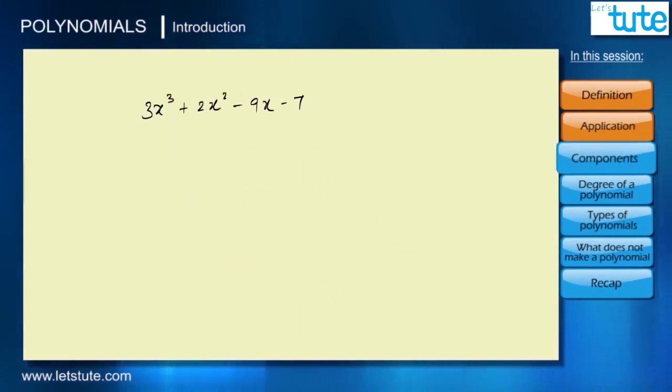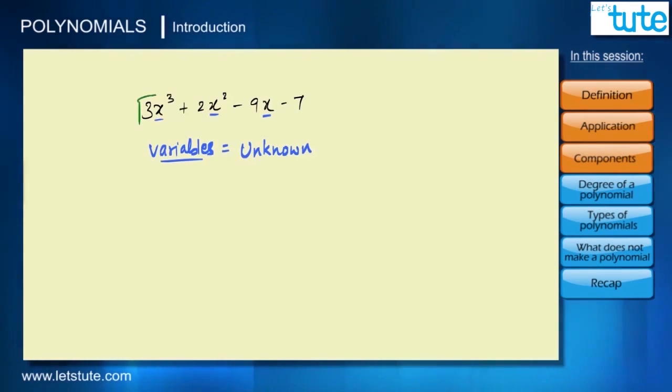We will learn about it in later sessions, but first let us see what are the components of a polynomial. Let's take the same example. These letters that we see, like x, are called variables. We call them variables because we don't know their value. Instead of x there could have been y, z, or anything. Then these numbers in front of variables are the coefficients. We also call them constants because they have a particular value—in this case plus 3, plus 2, minus 9, minus 7.